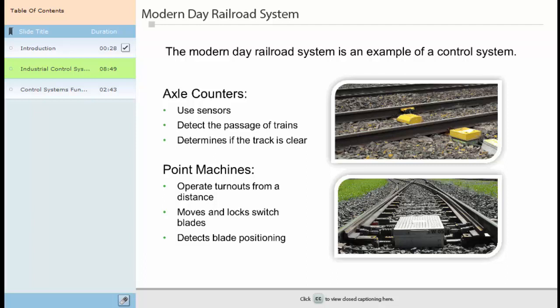Axle counters attach to a train track that detect the passage of trains in a single direction. Axle counters use detection points, or two independent sensors on merging tracks, to detect the presence of other trains. This is a safety device that determines if the track is clear for passage.